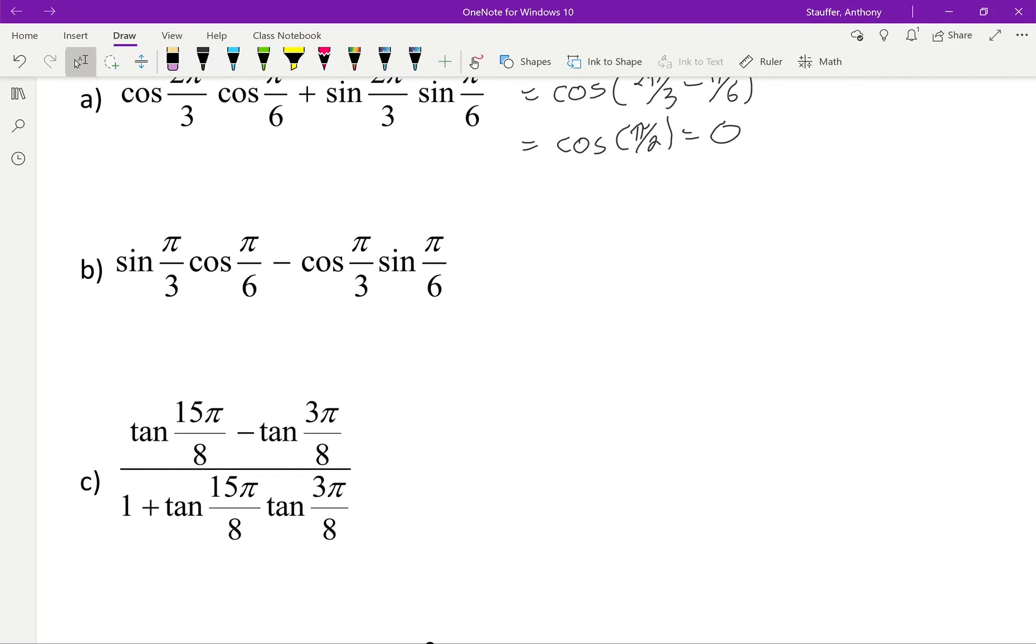Looking at this one right here we just notice it's the sine difference, so it's just going to equal the sine of π/3 minus π/6, which just ends up equaling sine of π/6. And then jumping onto our unit circle that gives us 1 over 2.